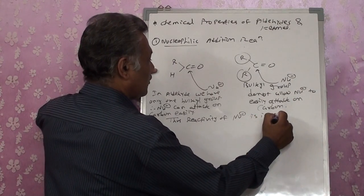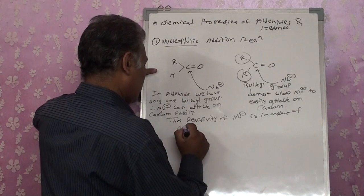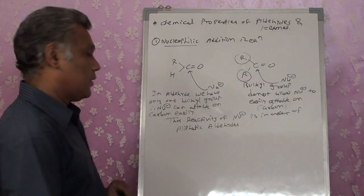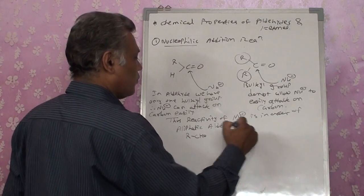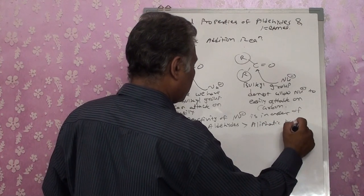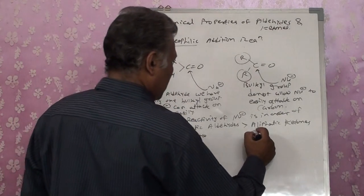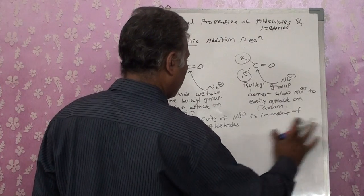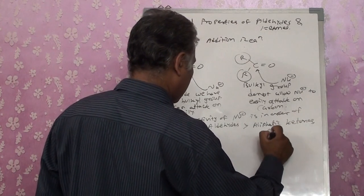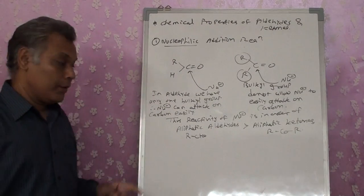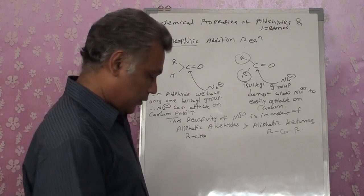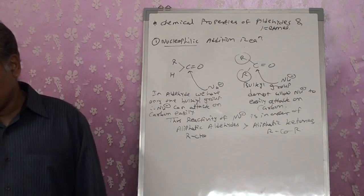Therefore, the reactivity order is: aliphatic aldehydes (RCHO) are much more reactive than aliphatic ketones (RCOR). Similarly, aromatic aldehydes are more reactive than aromatic ketones. That is the reactivity order for nucleophilic addition reactions.